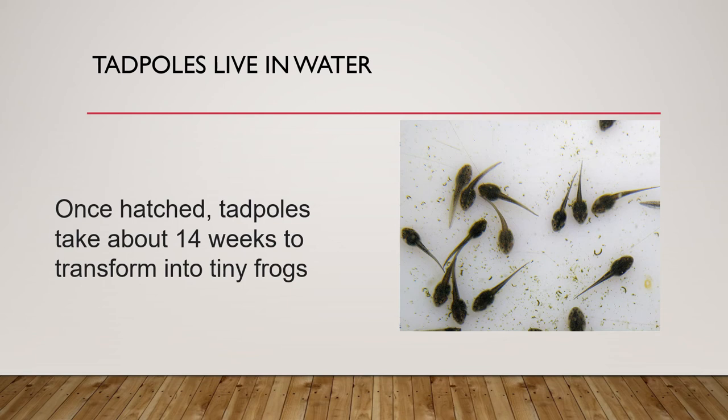Now we are going to talk about animals in water. Even small ponds are generally full of animals. Some of these are so tiny that they are not visible to the naked eye. Some animals like fish and tadpoles live in water. Some like ducks, geese, and swans stay on the water surface. Others like snails, earthworms, water beetles, and dragonflies live near water bodies.